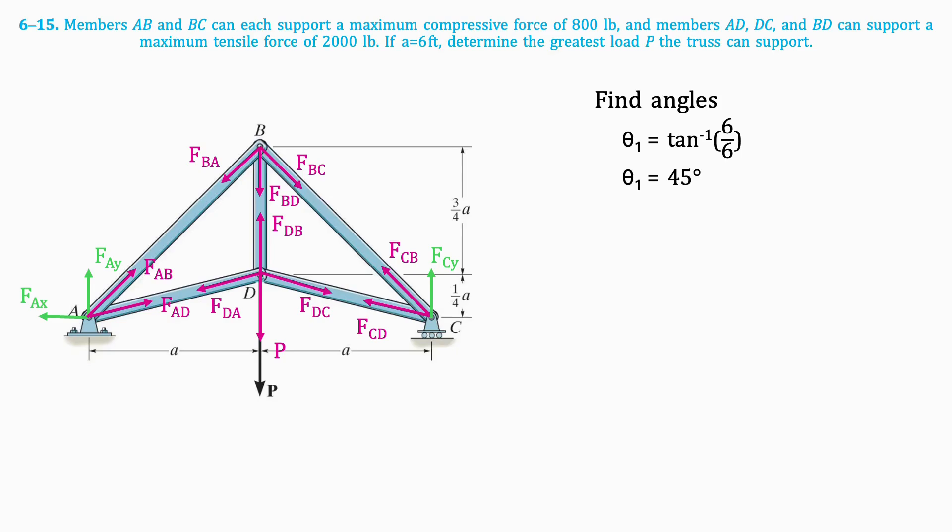Next, let's find the angle between FAD and the horizontal. The base of this triangle is still equal to 6 feet, but the height is a quarter of 6, which is 1.5 feet. Taking the tan inverse of this ratio results in an angle of 14 degrees.